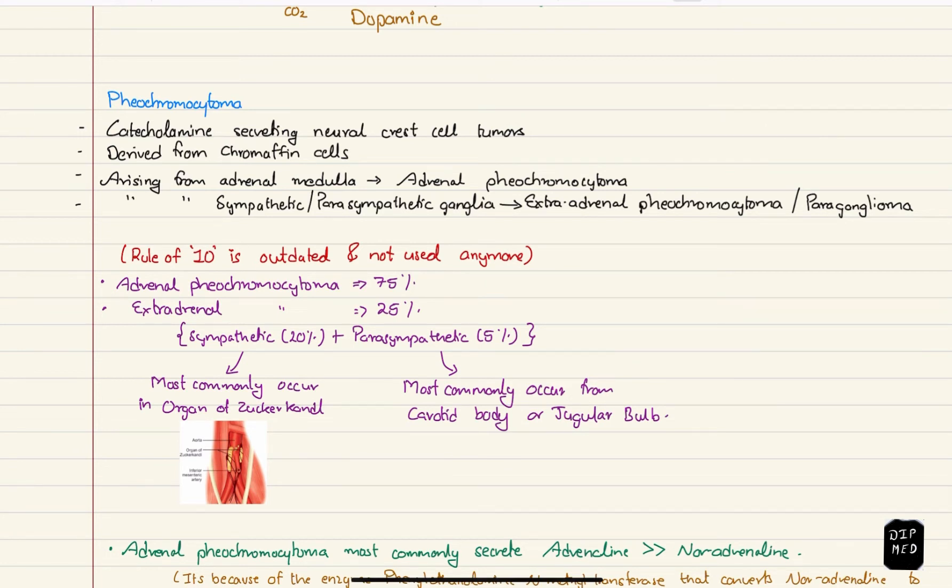Now coming to the disease associated with medulla, that is pheochromocytoma. Although it is the most commonly asked adrenal disorder in exams, the disease itself is not very common. Pheochromocytoma is a catecholamine secreting neural crest cell tumor derived from chromaffin cells. When it arises from adrenal medulla, we call it adrenal pheochromocytoma. But if it arises from other parts than adrenal, like sympathetic or parasympathetic ganglia, we call it extraadrenal pheochromocytoma or paraganglioma.